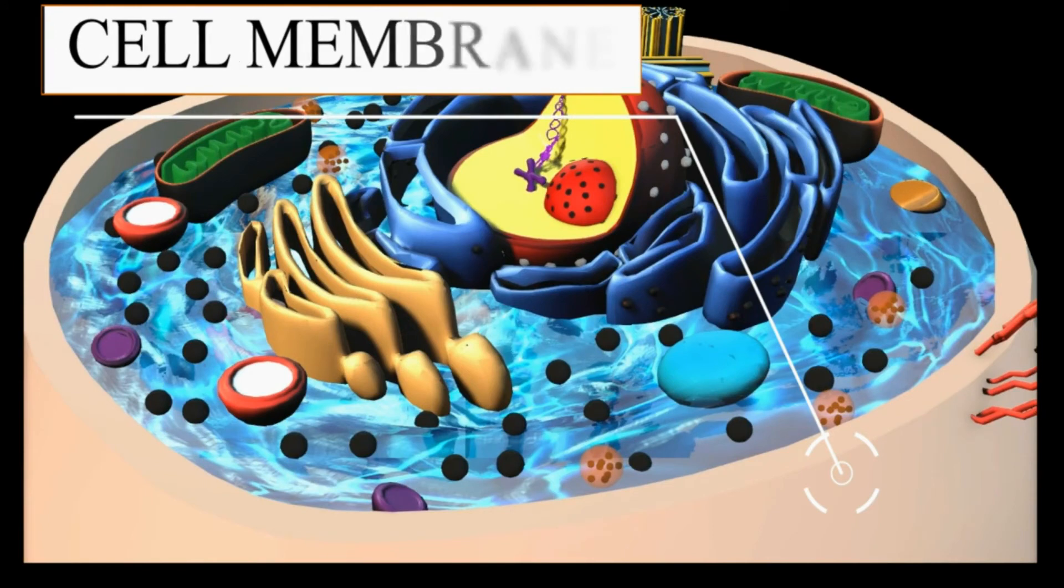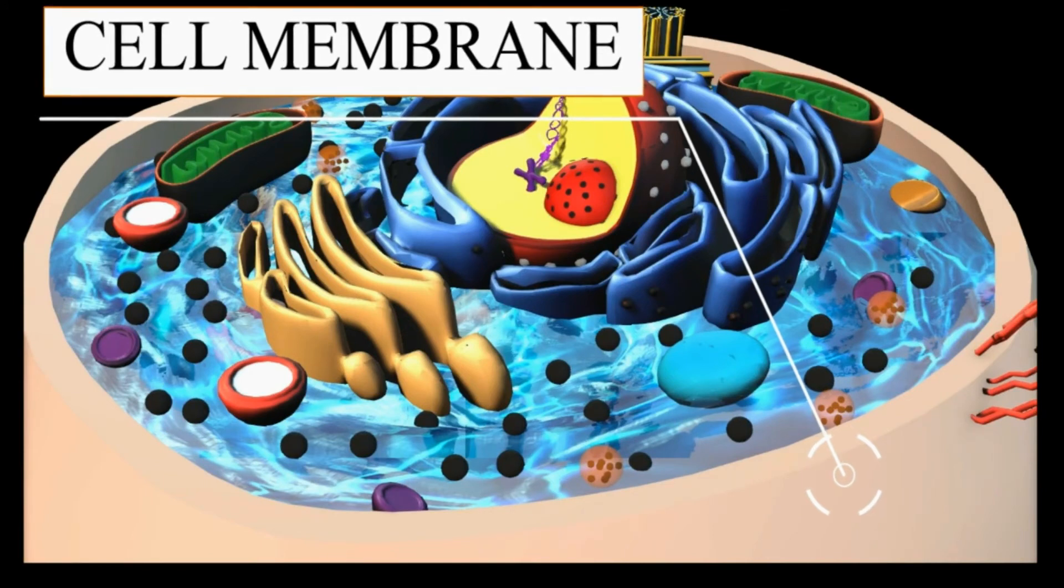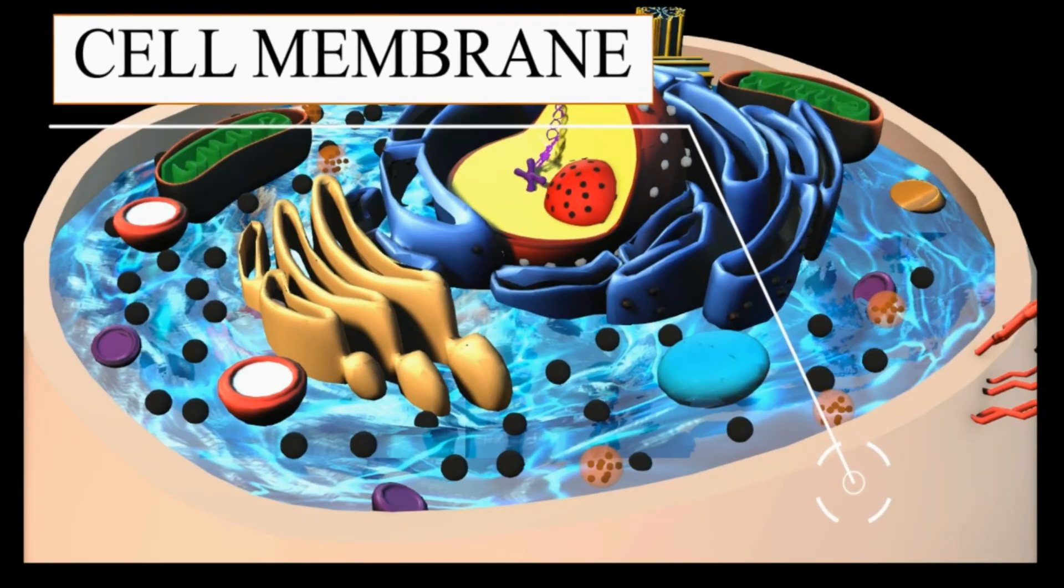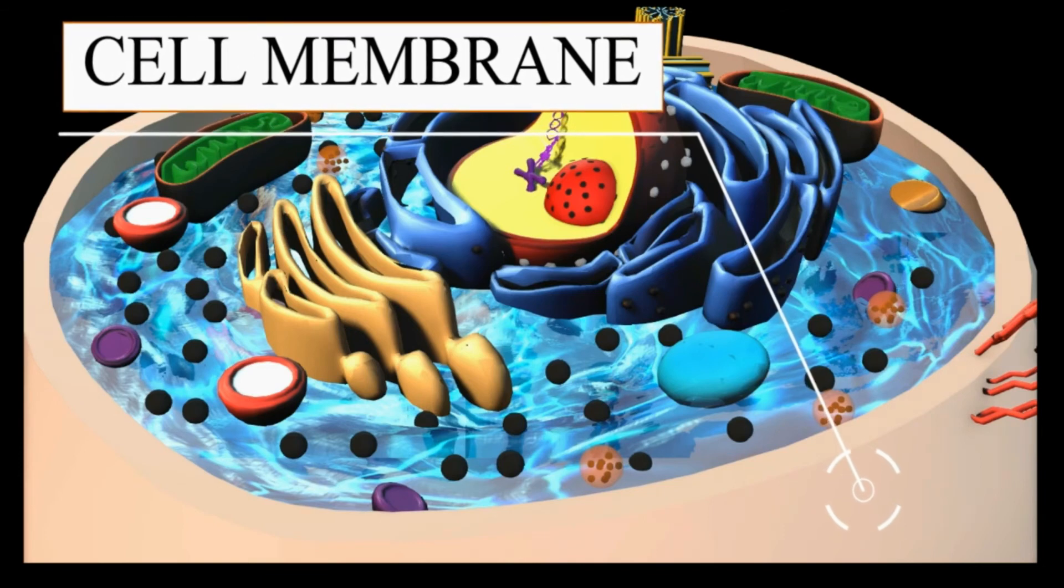The cell membrane, also called the plasma membrane, is found in all cells and separates the interior of the cell from the outside environment.